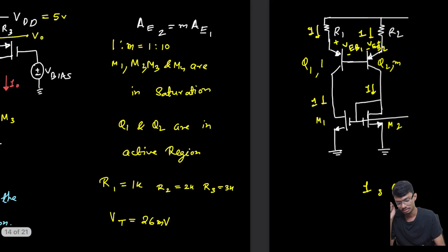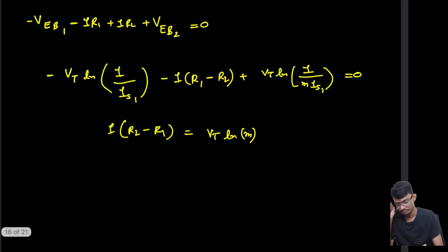So R2 is 2, R1 is 1, so I equals 26/(2-1) ln(10). This is in microamps, we're calculating in microamps. So I0 equals 26 ln(10) microamps.